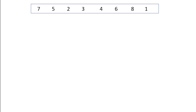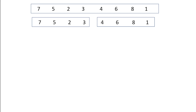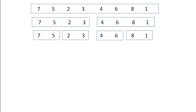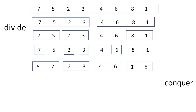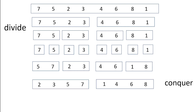The merge sort has two parts. First, we split our list in half, half again, half again until we have single elements. That's the divide part. Then we compare two elements and make sure they're in order, then four elements, then our final list. That's the conquer part.